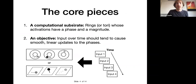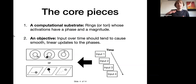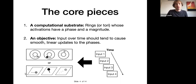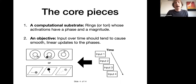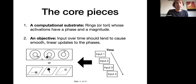The core pieces of this algorithm: the computational substrate is rings, or toruses, or rhombuses, where activations have both a phase and a magnitude. I've drawn two options below: rings and toruses, color-coded to show some responding more vigorously than others. The second piece is the objective: a time-series input coming into the network should tend to cause smooth linear updates to the phases, depicted as dots equally spaced apart within a module, though they can differ across modules.